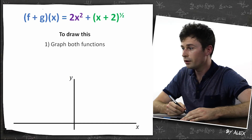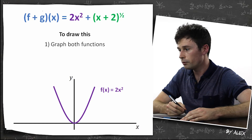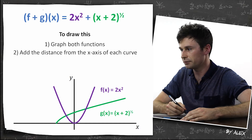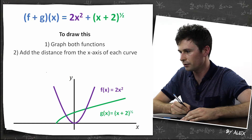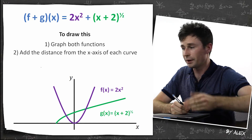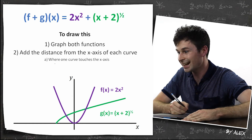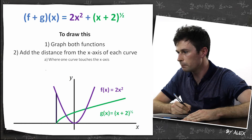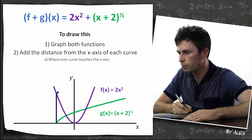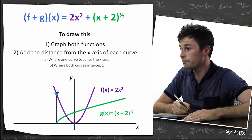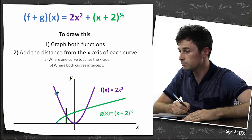If you wanted to draw this, you'd graph both functions and just add the distance from the x-axis of each curve — meaning in the y direction. The best place to do this is where one curve touches the x-axis, because that one is zero and the other is whatever, so you just put a point there. Another good place is where both curves intercept, because you just double the value since they're both the same, and then draw in a point there.